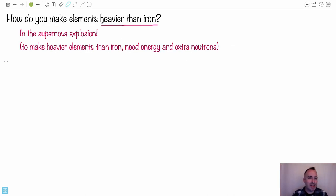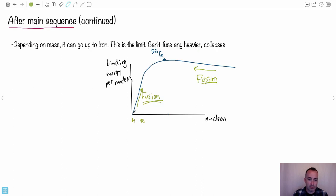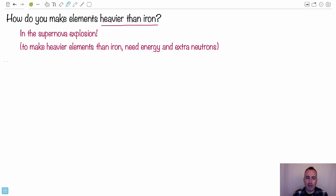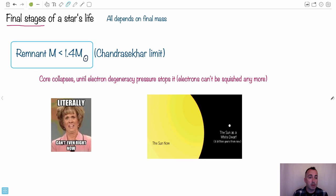So how do you make the elements heavier than iron? Because, I mean, if you wonder, stars can, by themselves, through fusion, make all the elements up to and including iron. You might wonder, well, how do we get things heavier than iron? Well, then we need extra help. It's not energetically favorable, so we need to do something else. There's a supernova explosion. To make the heavier elements, we need extra energy and extra neutrons, it turns out.